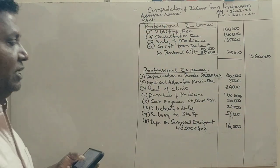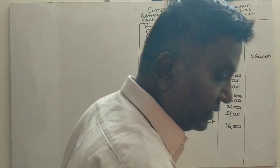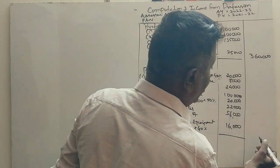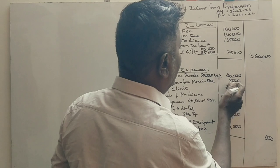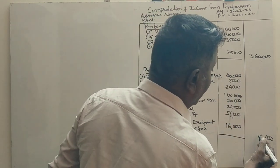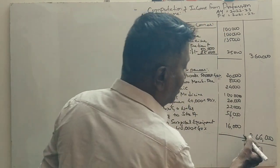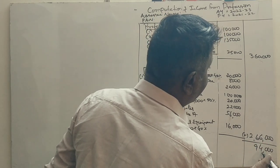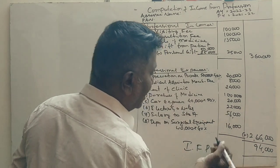All adjustments are now complete. Total professional expenses come to 2,66,000 rupees. Deducting expenses from professional income gives income from profession of 94,000 rupees.